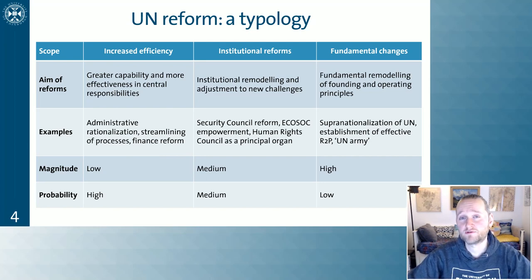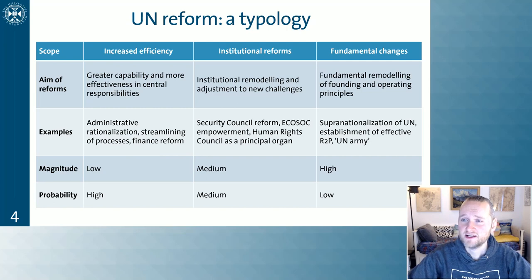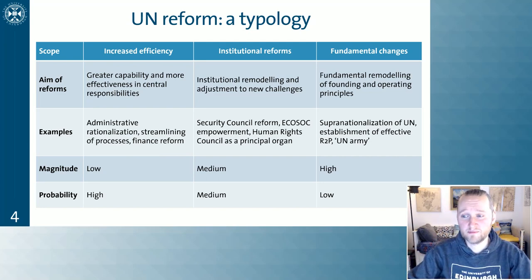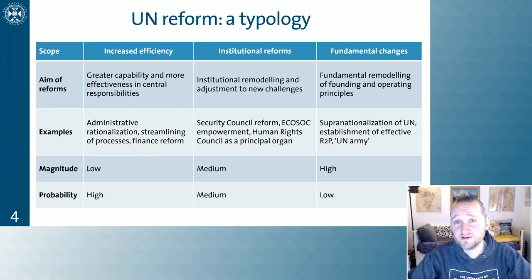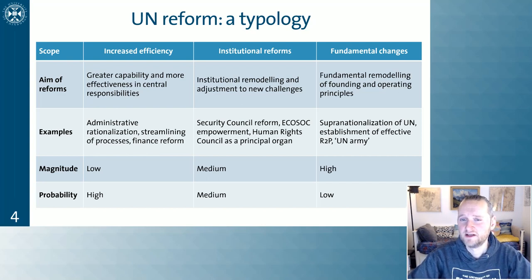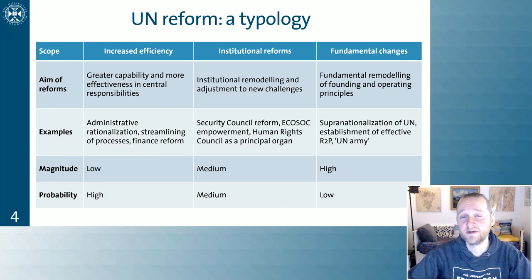In the medium category we have institutional reforms. These change something about the UN as an institution — they go beyond just increasing efficiency and effectiveness. Any types of institutional remodelings and adjustments to changing environments fall into this category. Examples include reforming the Security Council, reforming ECOSOC — which we talked about as the UN's least powerful deliberative body — maybe changes to the Human Rights Council, or elevating it to a principal organ next to the Security Council, the GA, and ECOSOC. So these are things that essentially move building blocks around in the institutional design of the UN, going beyond increasing efficiency but stopping short of fundamentally changing the institution.